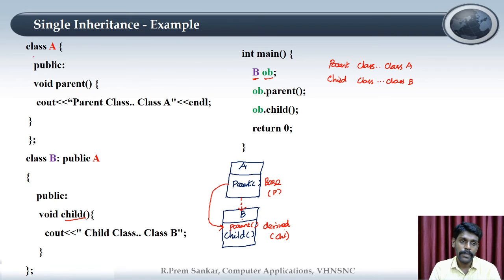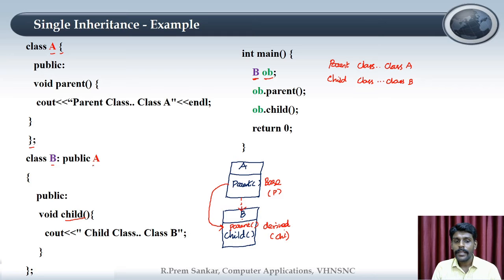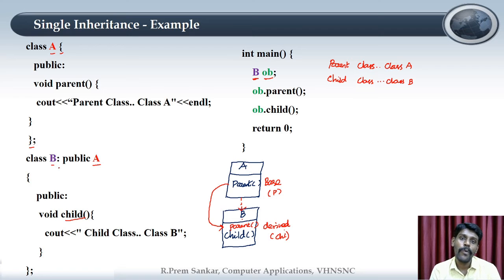Class A and class B — class B has an access modifier, which is public. We have access modifiers: private, public, and protected. What kind of derivation? It can be public, private, or protected.